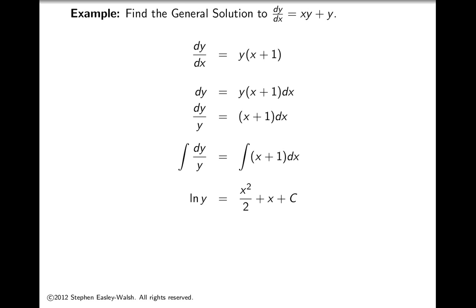Now this is almost the answer, but you must remember we're looking for y, not log y. So the way we cancel a log is by taking the exponential of both sides, because e and log cancel on the left. I'm left with the answer: y equals e to the power of (x squared over 2 plus x plus C). So this is the solution here.